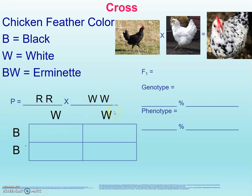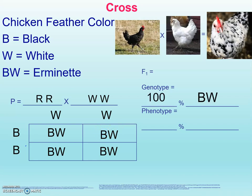Put them around your Punnett square. And then what we'll see: box one, two, three, and four are all BWs. For their genotypes — the two letters represent our underlying genes on our chromosomes — all four boxes are BW, so that's 100% BW, 100% heterozygous. And then for the phenotype, we've got to look back at our key. BW is erminette. So we have 100% erminette.